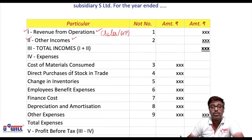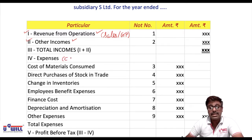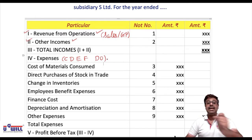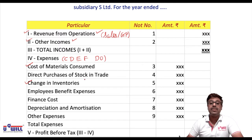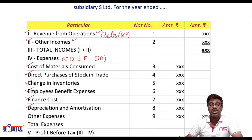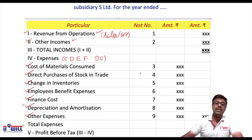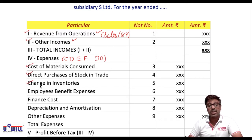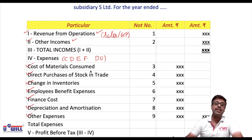For expenses, remember the shortcut: C D E F Do. C stands for cost of materials consumed and change in inventories; D stands for direct purchases of stock in trade; E stands for employees benefit expenses; F stands for finance cost; then Do - D stands for depreciation and amortization, O stands for other expenses.